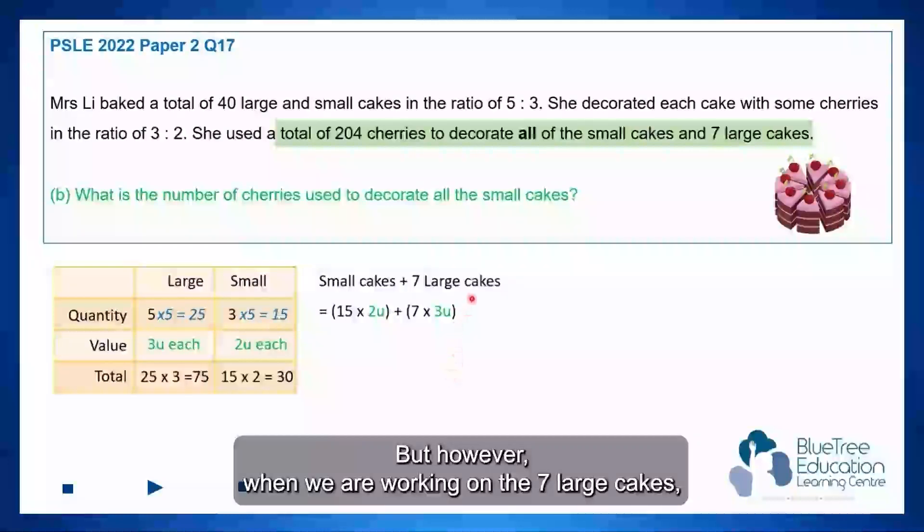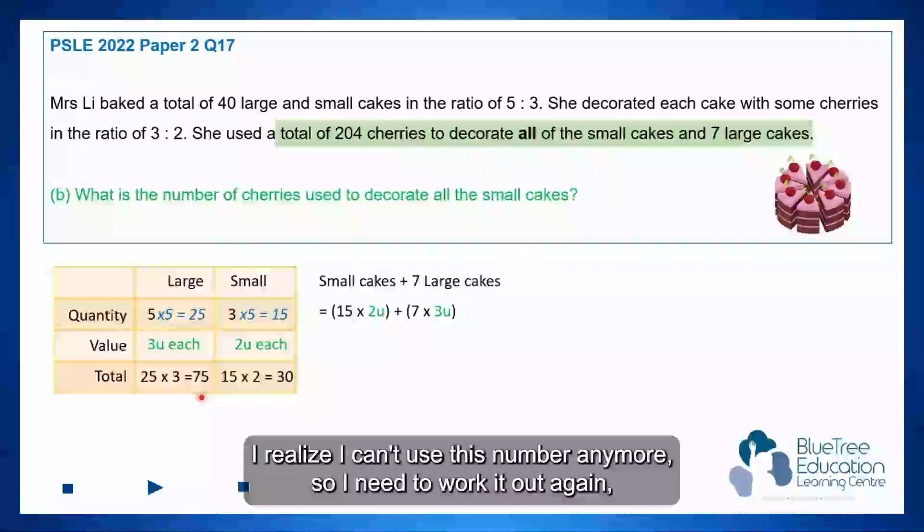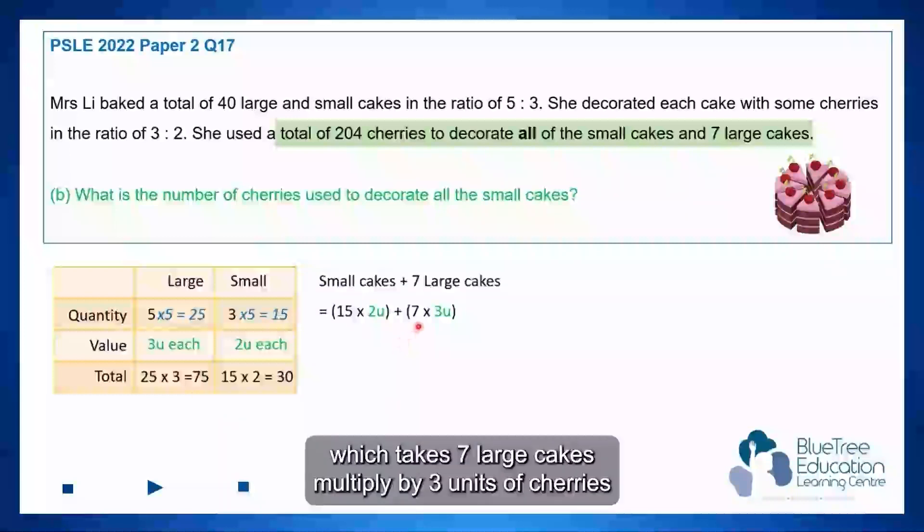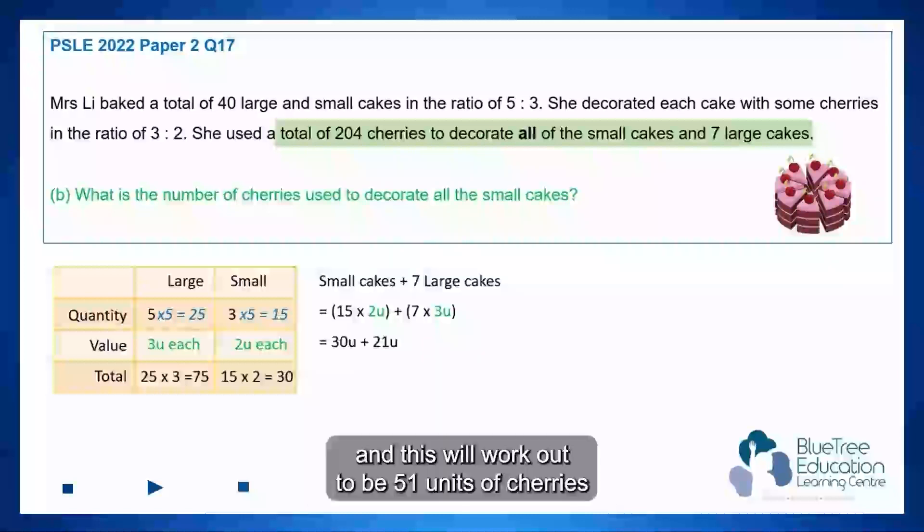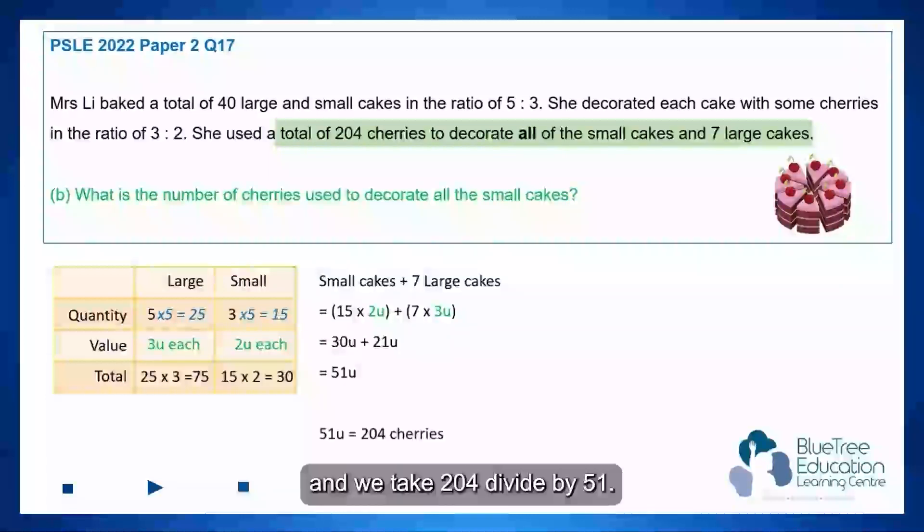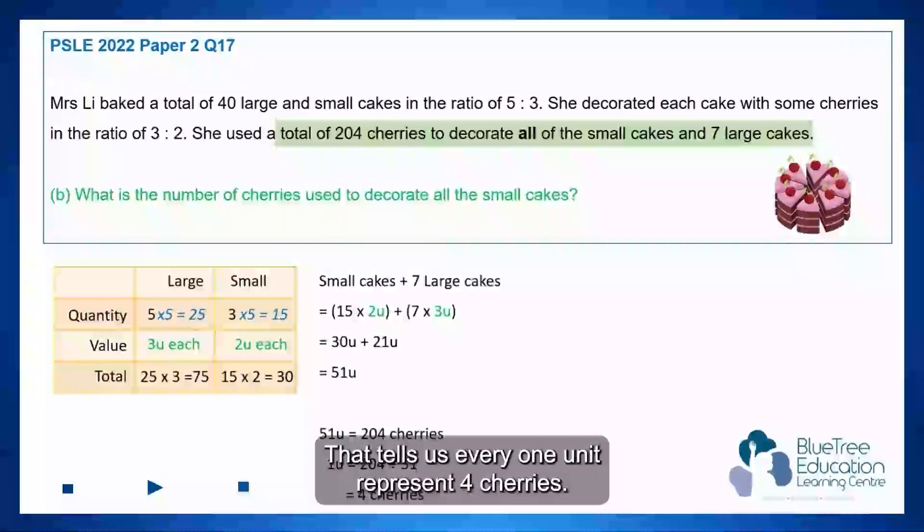So I'll need to work it out again, which takes 7 large cakes multiplied by 3 units of cherries. And this will work out to be 51 units of cherries. And we take 204 divided by 51, that tells us every 1 unit represents 4 cherries.